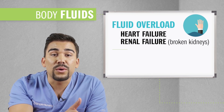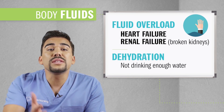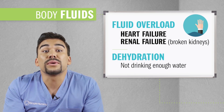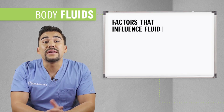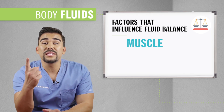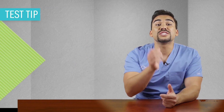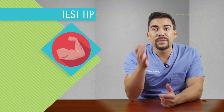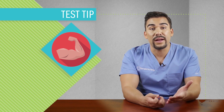What are the top three factors that mostly influence fluids? Number one is muscle, number two is body fat, and three is gender. Starting with muscle — muscle holds onto water. Write that down, that's a huge test tip. Skin and blood also contain the highest amounts of water in the body.